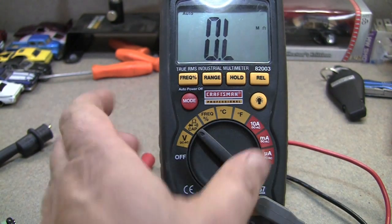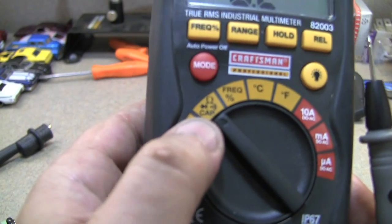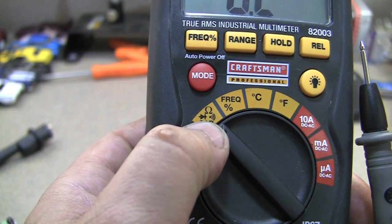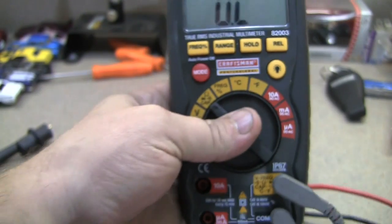Yours may have just that reading, but you see right here, this particular dial gives you continuity, ohms, all that stuff.